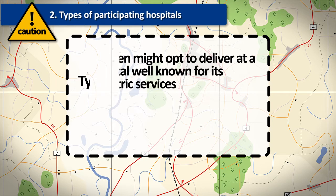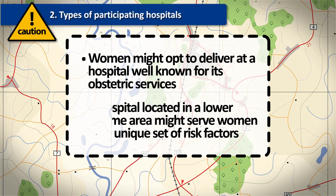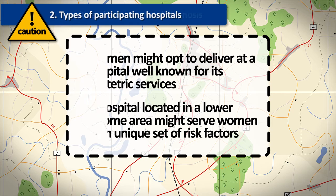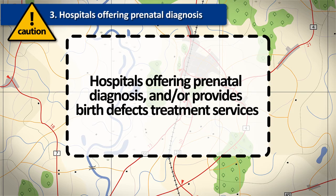For example, a hospital might be well known for its obstetric services and therefore many women might opt to deliver there. Further, a hospital located in a lower-income area might serve a population of women with a unique set of risk factors.